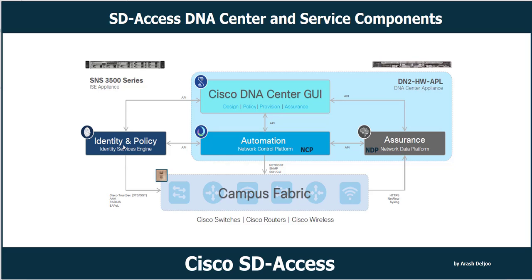Cisco ISE and DNA Center — meaning NCP and NDP — integrate with each other to share contextual information through APIs. This contextual information is then provided to the user management layer. The NDP subsystem shares contextual analytics information with Cisco ISE and the NCP subsystem, and provides this information to the user management layer.